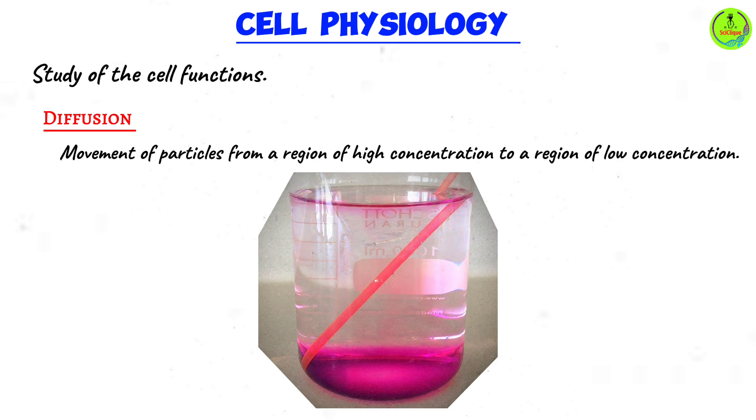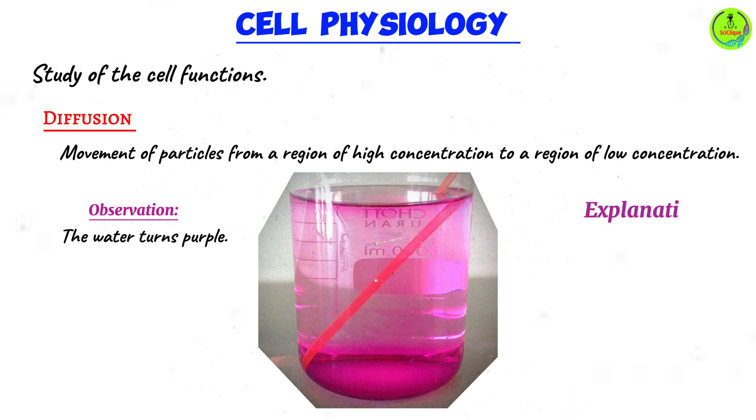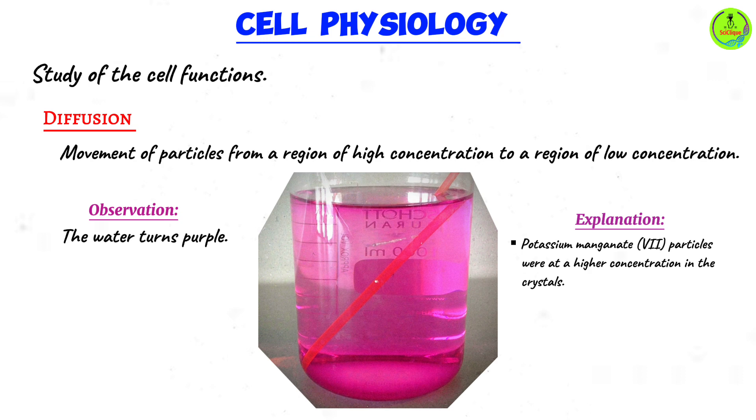What you're going to observe after some time is that the water turns purple in color. Initially, of course, it was colorless, but it turns purple after a few minutes. How did this happen? Diffusion, of course. The potassium manganate 7 particles were highly concentrated within the crystals. What did we say about diffusion? Particles are going to diffuse from a region of high concentration to a region of low concentration.